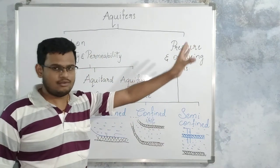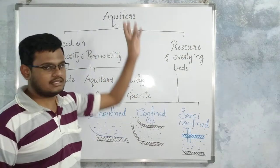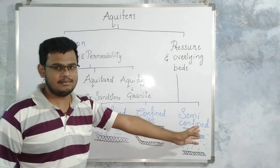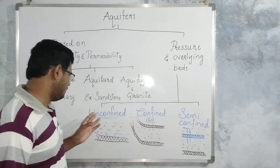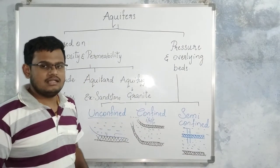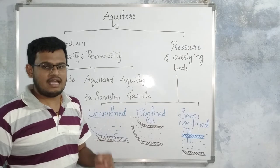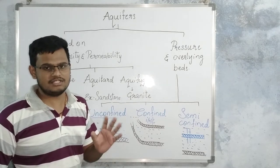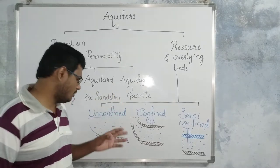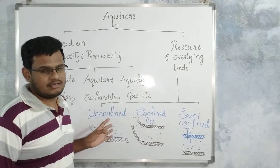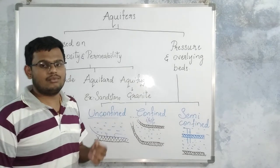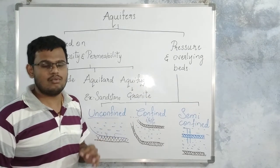Now, based on the pressure and overlying beds, the aquifers are classified into three categories: unconfined aquifers, confined aquifers, and semi-confined aquifers. Unconfined aquifers are aquifers in which water is carried at atmospheric pressure level — whatever atmospheric pressure exists outside, the water exists at that same pressure. When you drill a bore well into an unconfined aquifer, the water level present in it represents the water table.